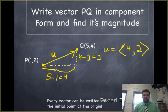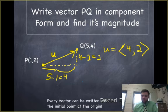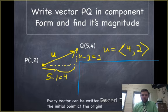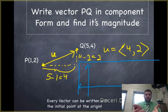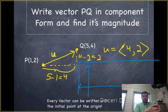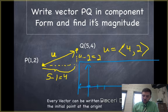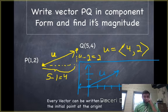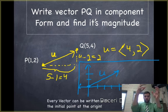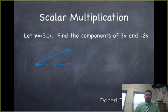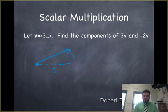When we write a vector in component form, every vector can be written with the initial point at the origin. So this vector PQ went from (1, 2) to (5, 4), but we could have easily written it starting at the origin. The components are to the right 4 and up 2, so if I started at the origin I go over 1, 2, 3, 4 and up 2 units — over 4 and up 2 — and there is my vector U written at the origin. This vector is a shift; it can be put anywhere you'd like.